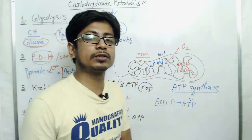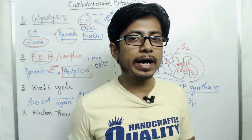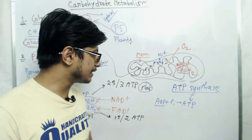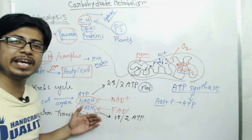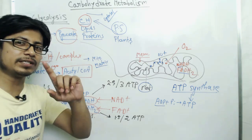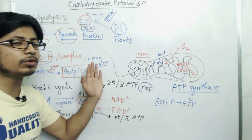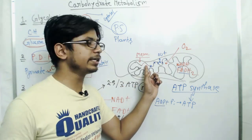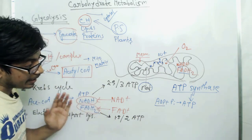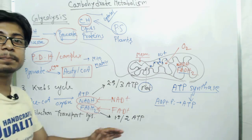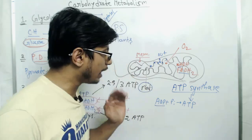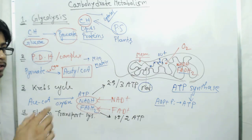In the electron transport chain we can divide the process into two important sections. The first is the electron transport chain itself — the transfer of electrons using the different membrane-bound complexes. The second part is ATP synthesis.